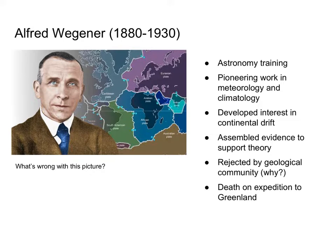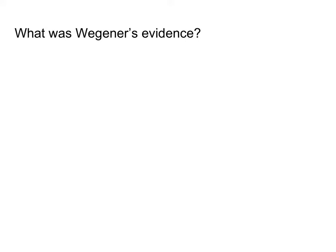Unfortunately, he died early on an expedition to Greenland, so he never had a chance to be vindicated. He died at age 50. He would have had to live about another 20 more years to see the ideas come around full circle. I asked you on the quiz what evidence Wegener put together — the fossils, the same fossils found on different continents.